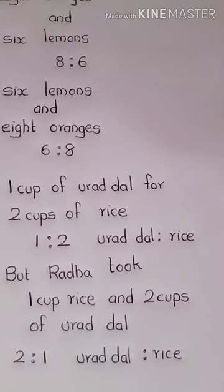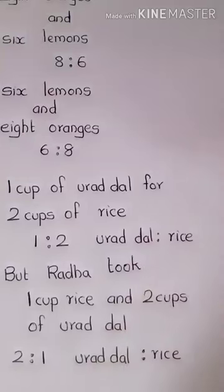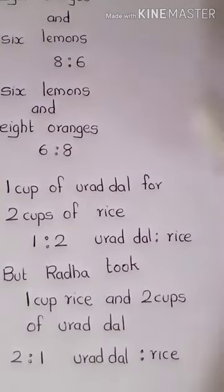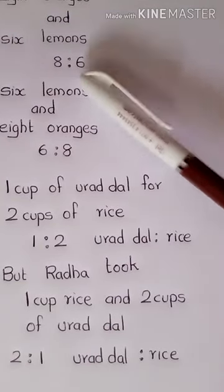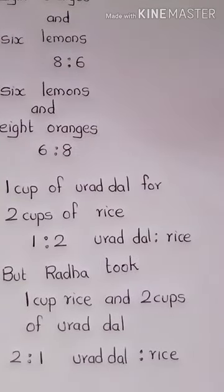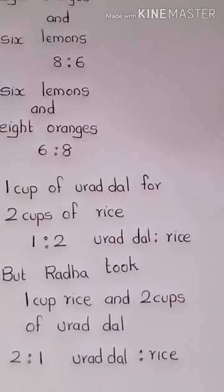The order of numbers in a ratio is very important. If you write 8 is to 6 and 6 is to 8, they are entirely different. So read the question carefully and identify which is the first number and which is the second number.